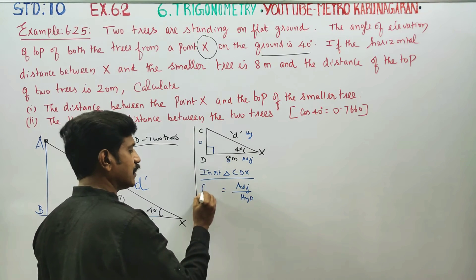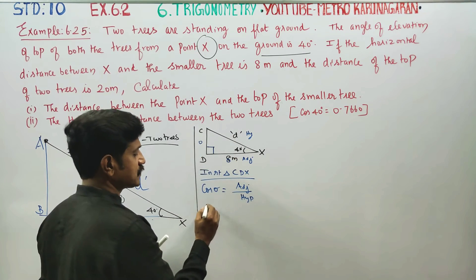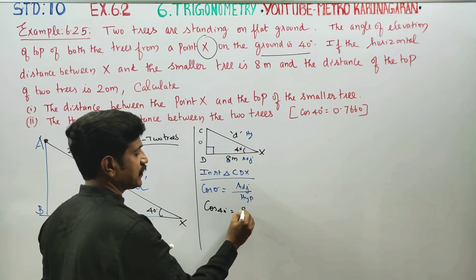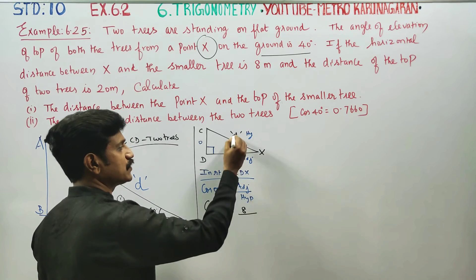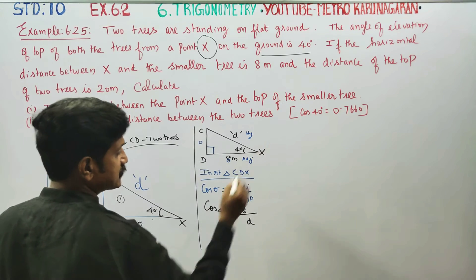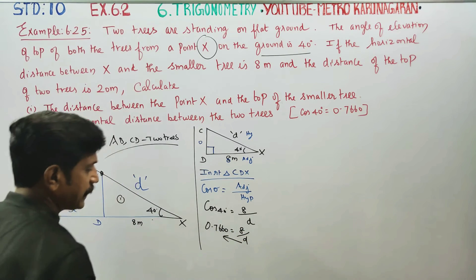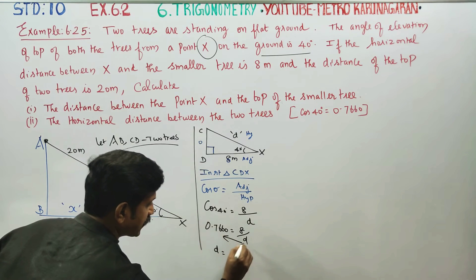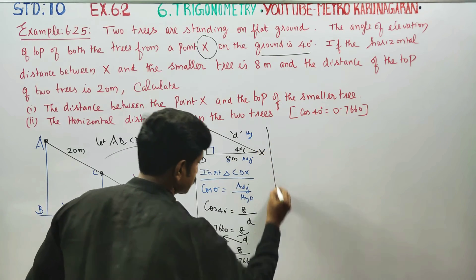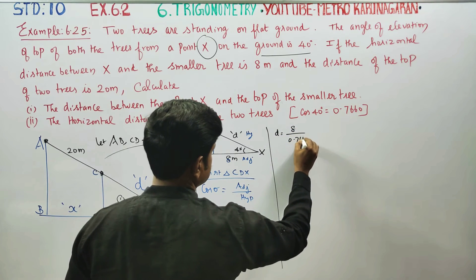Friend, cos theta equals adjacent over hypotenuse. The distance D is the hypotenuse. So D is equal to 8 divided by cos 40°, which is 8 divided by 0.7660.